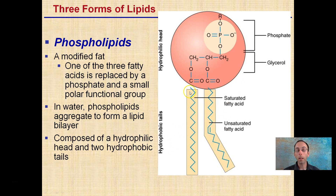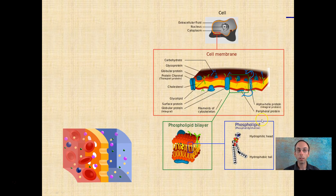You can recognize the saturated fatty acid because it has all single bonds — saturated with hydrogens. And the unsaturated one has a single double bond, which still classifies it as unsaturated. This would be in the cis form here, because both hydrogens are forming on the same side.